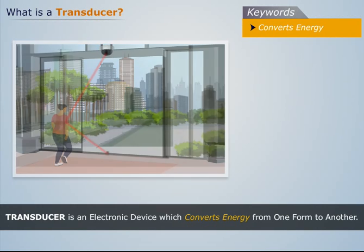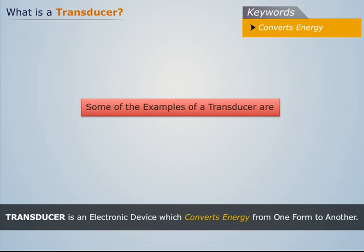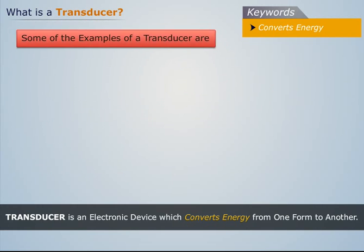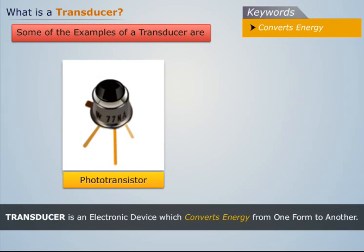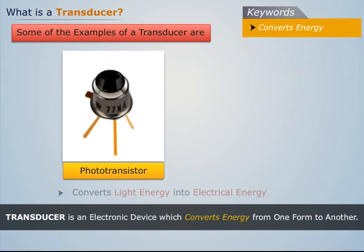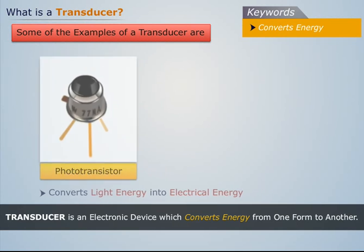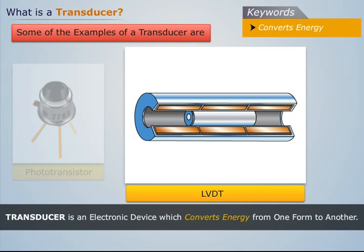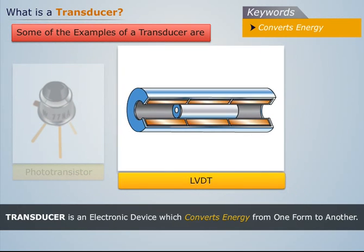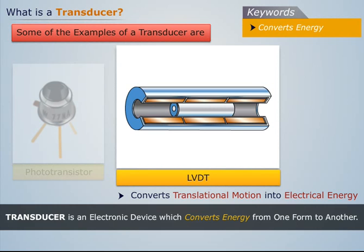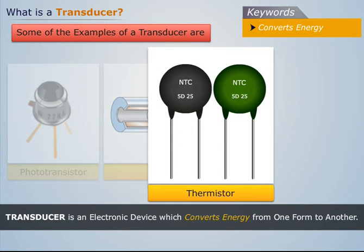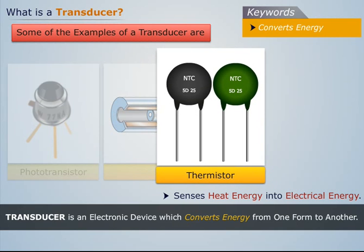Some examples of a transducer are: a photo transistor, which converts light energy into electrical energy; LVDT, which converts translational motion into electrical energy; and a thermistor, which senses heat energy and converts it into electrical energy.